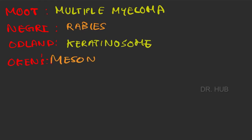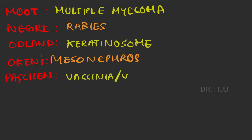Odland bodies in keratinosome. Okin's bodies in mesonephros. Paschen bodies in vaccinia or variola.